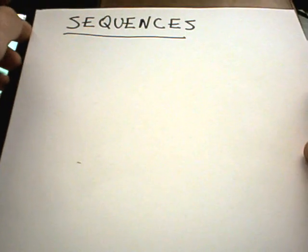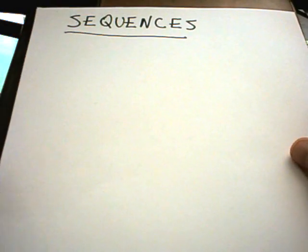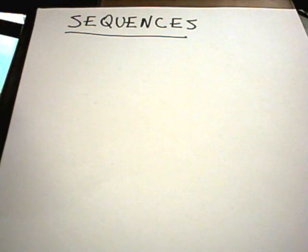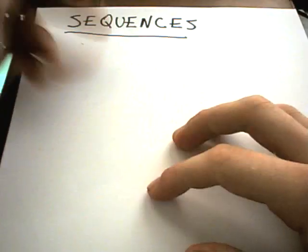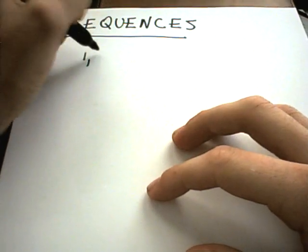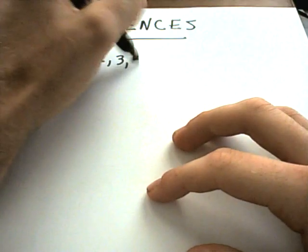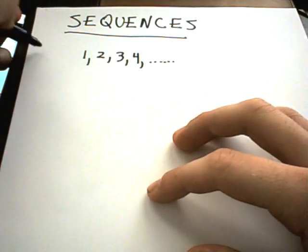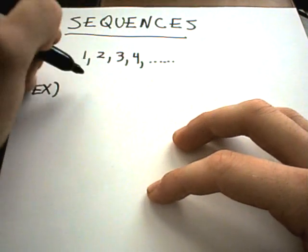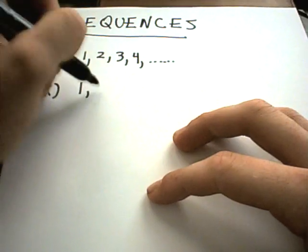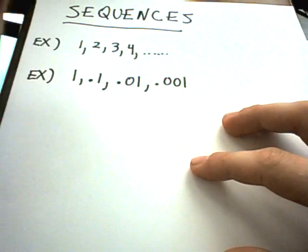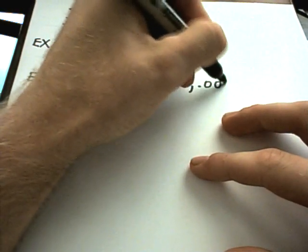In this video we're going to start talking about sequences. A sequence is basically just a listing of numbers. A very simple sequence would be 1, 2, 3, 4, etc. Another example would be 1, 0.1, 0.01, 0.001, 0.0001, and just assume this pattern continues.